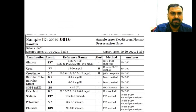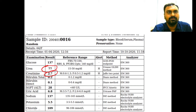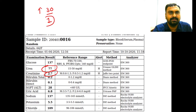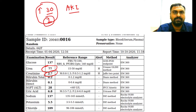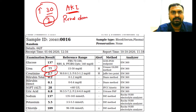Now consider urea 77 and creatinine 2.7. The normal ratio of urea to creatinine is roughly 30:1. Whenever there is acute kidney injury or renal damage, both urea and creatinine will be elevated together.